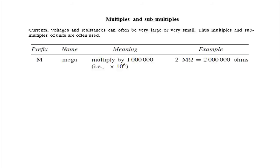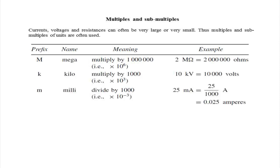Currents, voltages and resistances can often be very large or very small. Thus, multiples and sub-multiples of units are often used. We use mega when we multiply by one million, kilo when we multiply by one thousand, milli when we divide by one thousand, and micro when we divide by one million.